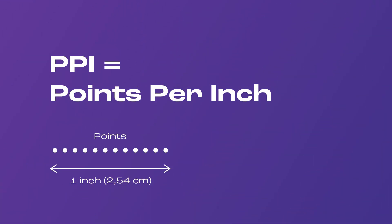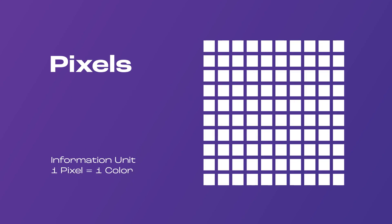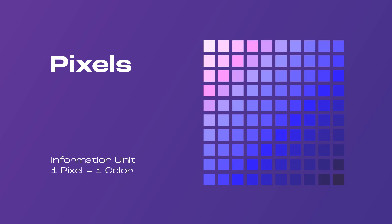So first things first, what exactly do DPI and PPI mean and stand for? Let's start with PPI, which stands for points per inch, and points are nothing else but good old pixels — the ones you know from your screens, like the one you're most likely looking at right now, and the ones you also know from setting up a canvas in a graphic app like Photoshop or Procreate. Each pixel is a little information unit containing one single color, so the pixels of an image are a collection of information — the order of all the pixels and the color information they contain. That's the image you can see on the screen.